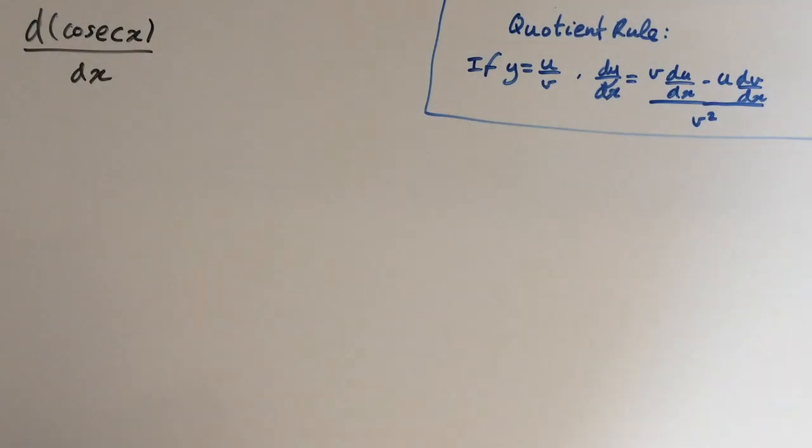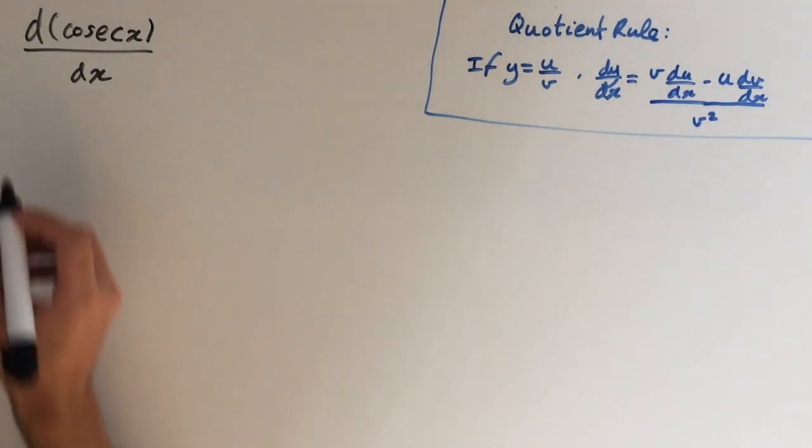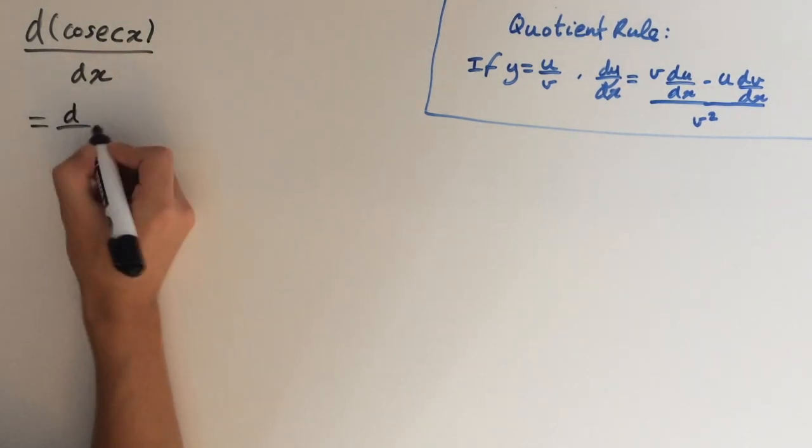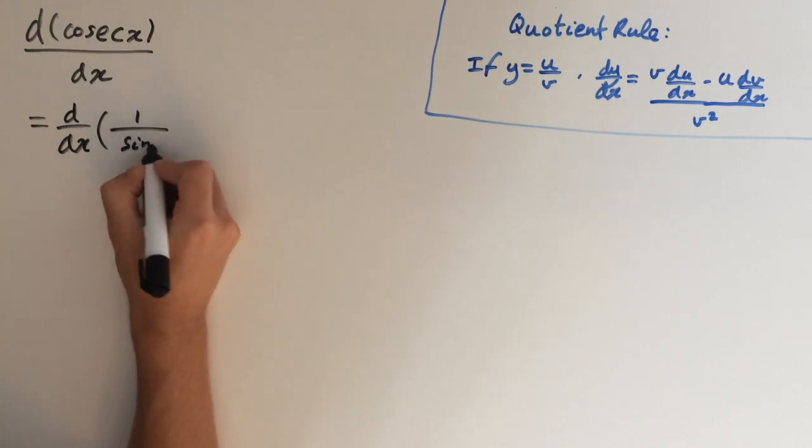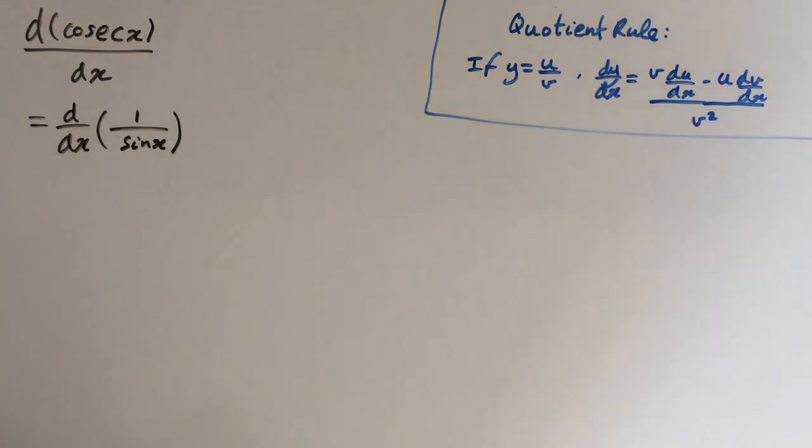Hey guys, in this video I'm going to show you how to find the derivative of cosec of x. So what we can do is write cosec of x as 1 over sine of x. And now we want to use the quotient rule.